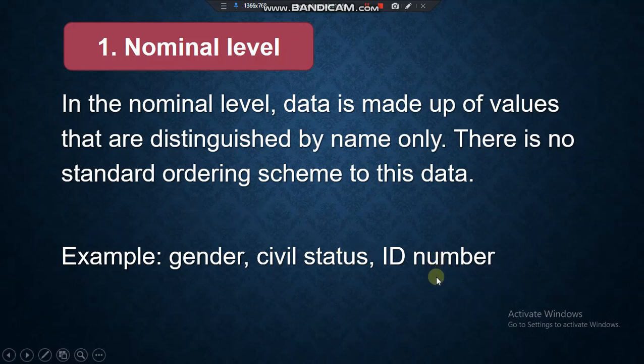ID number. If your ID number is 23, it doesn't mean you perform less than ID number 1. So, 23 and 1 as ID number are just names or labels. It has no value. That is the first level, nominal.